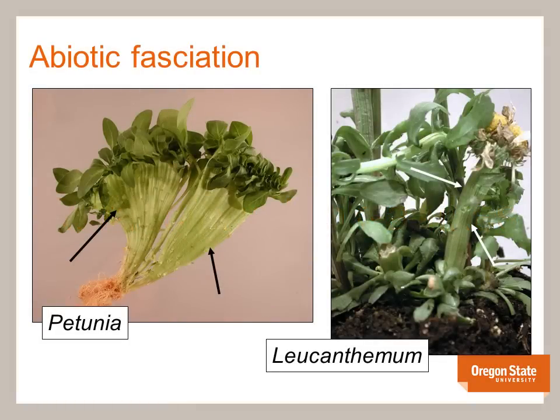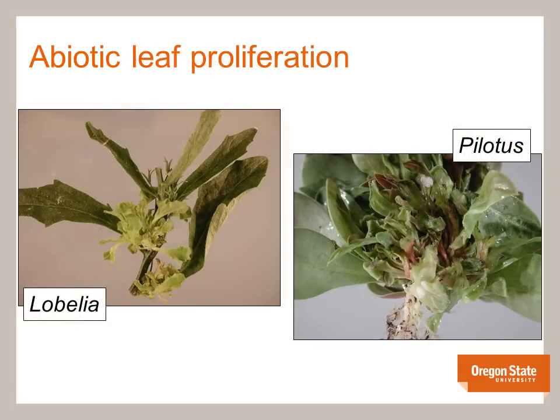Here are some examples of abiotic fasciation on petunia and leucanthemum. You can see that the arrows are pointing to the flattened stem tissue. We have seen this abiotic phenomenon on several species of both herbaceous and woody plants, including blueberry and redwood. Abiotic fasciation might be due to a genetic abnormality or due to some sort of growth regulator effect.